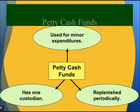Petty cash funds are of three types: used for minor expenditures, replenished periodically, and managed by one custodian. Companies keep petty cash on hand for temporary or frequent small expenditures, such as buying supplies.